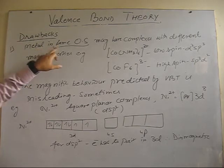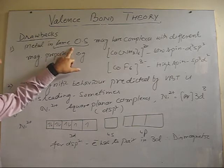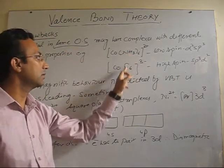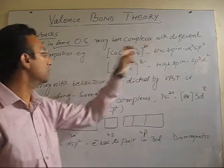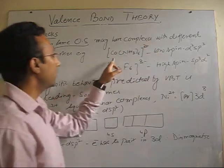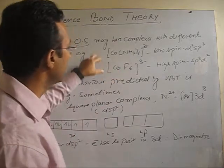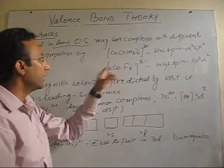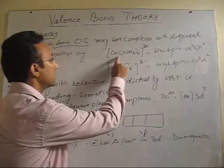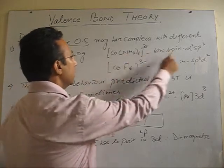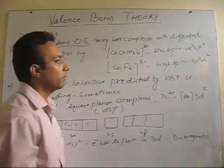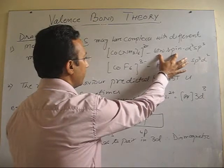First one, metal in one particular oxidation state, when combined with different ligands, may have complexes with different magnetic behavior. For example, I am having two complexes of cobalt here, in which cobalt having same oxidation state plus 3. In the first complex, we will see, with ammonia as the ligand, this complex undergoes d2sp3 hybridization, that is inner d orbital complex and it is low spin.